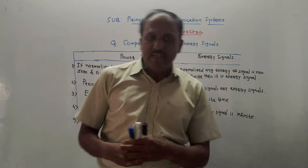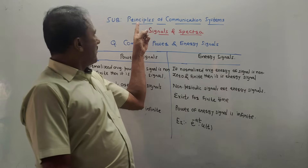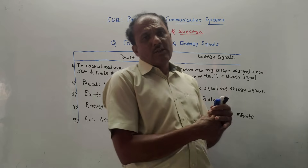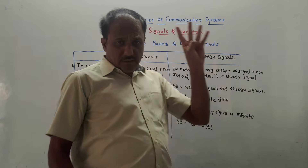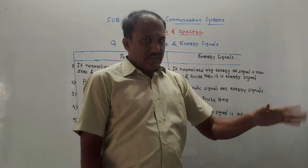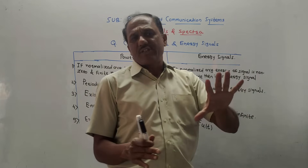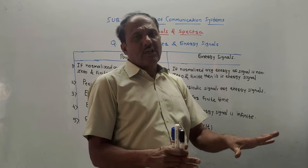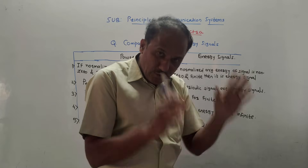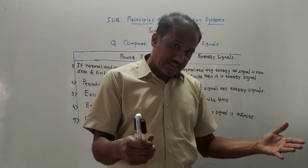Hello and welcome back to this channel. I am starting a new series for the subject Principles of Communication Systems. Some students requested me to start this series. The first unit in this subject is Signals and Spectra. Many points — around 90 — are common with the subject Signals and Systems, for which I have already created videos. I will provide the link in the description box. Those points are common for both subjects, especially standard or test signals, which is also common with Control Systems.